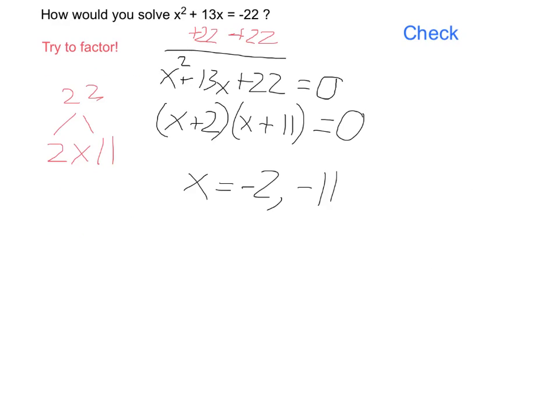You can check by putting these two values into my original equation up here, and seeing if the left side is equal to negative 22. Negative 2 squared is 4. Importantly here, we need to remember that when we're squaring negative 2, I'm multiplying negative 2 times negative 2, hence positive 4. So it's 4 plus negative 26, and yes, that is equal to negative 22. So the first one checks out.